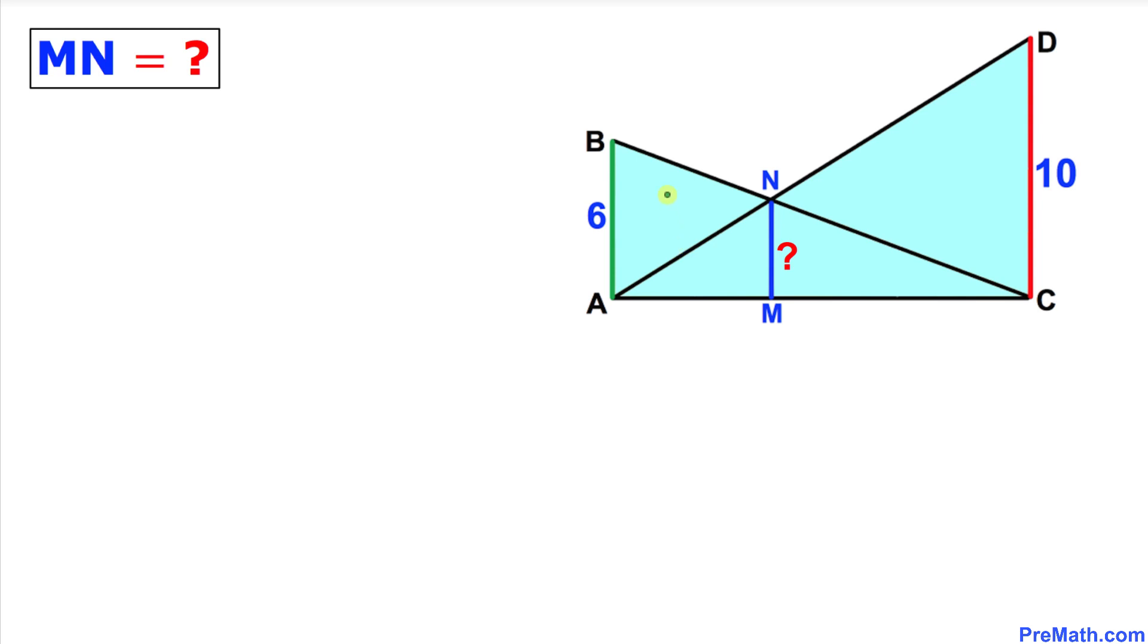Welcome to PreMath. In this video tutorial, we have two line segments AB and CD such that two ladders are drawn, in our case BC and the other one is AD, such that they intersect at this point N as you can see in this figure. Now we are going to calculate the length of this line segment MN, so let's go ahead and get started with the solution.